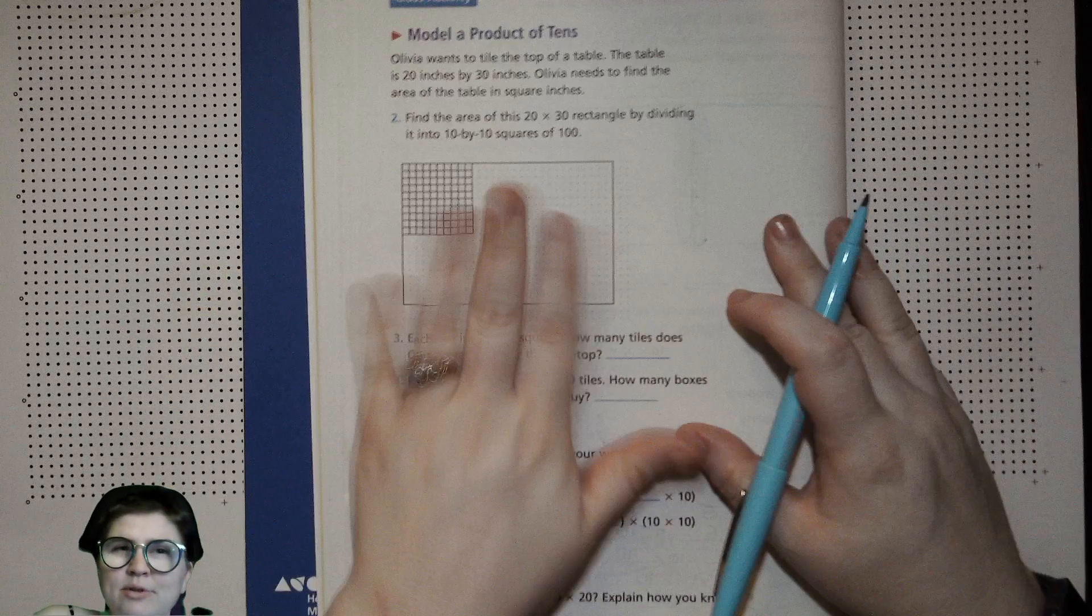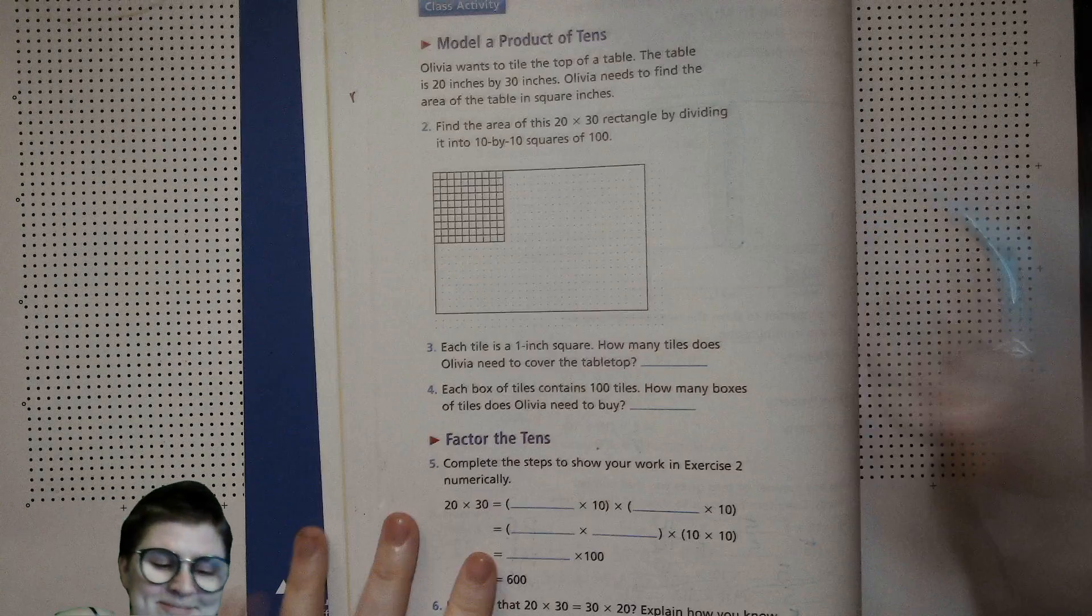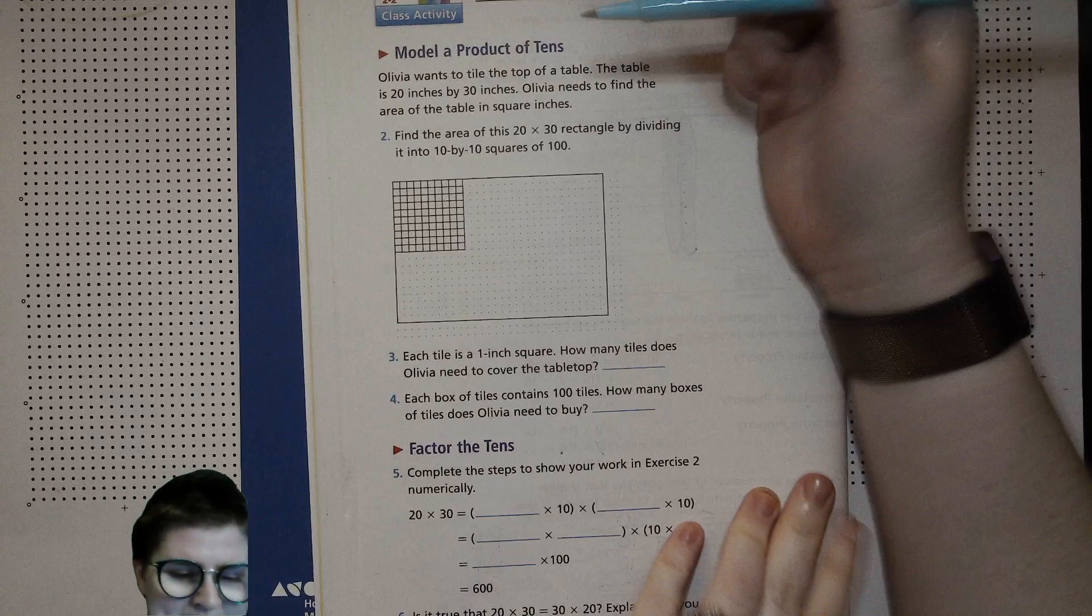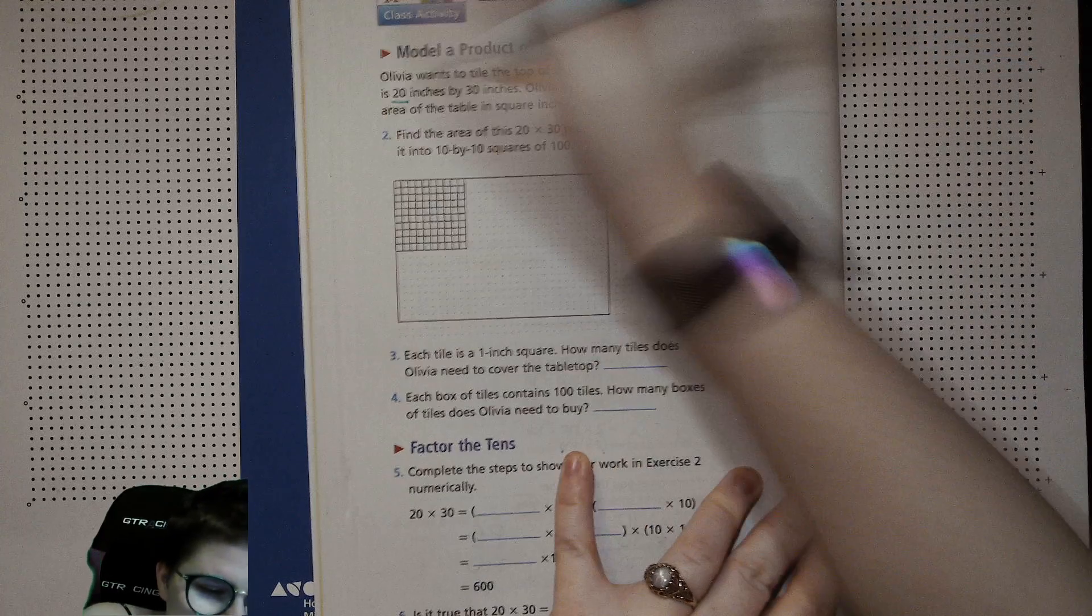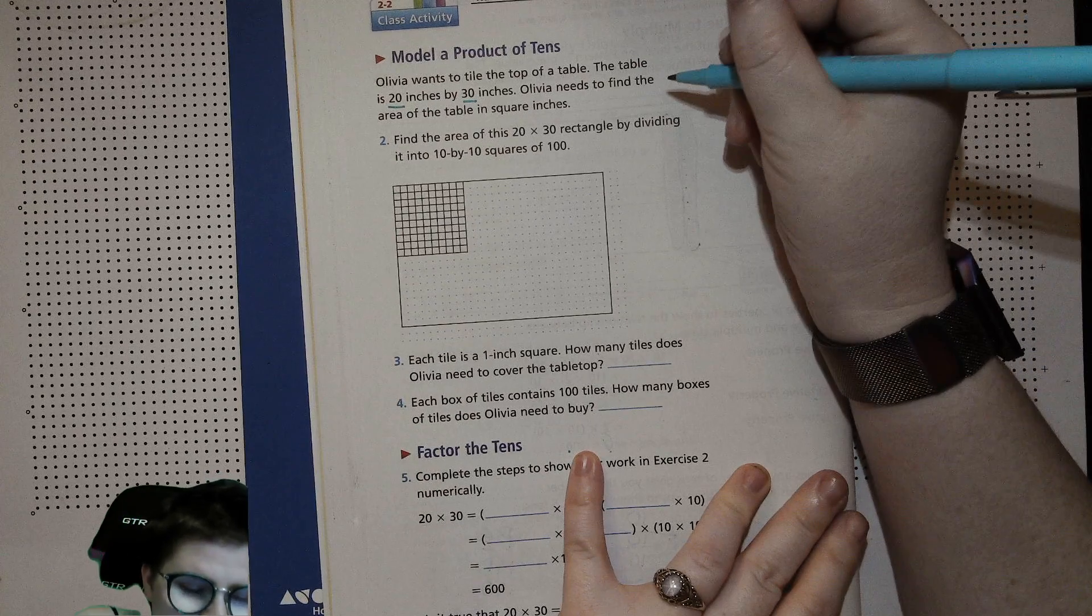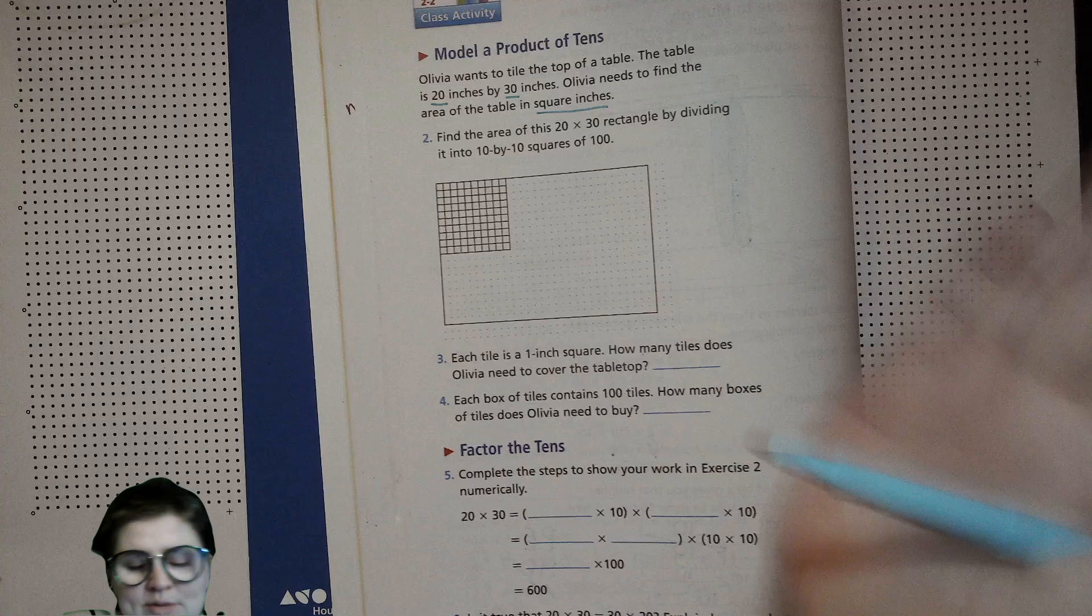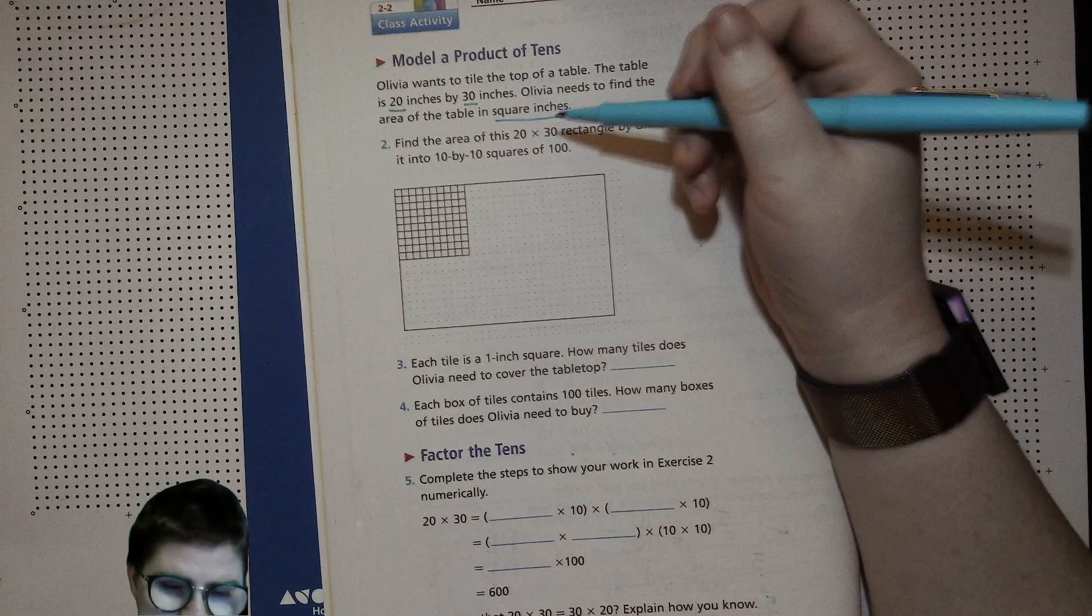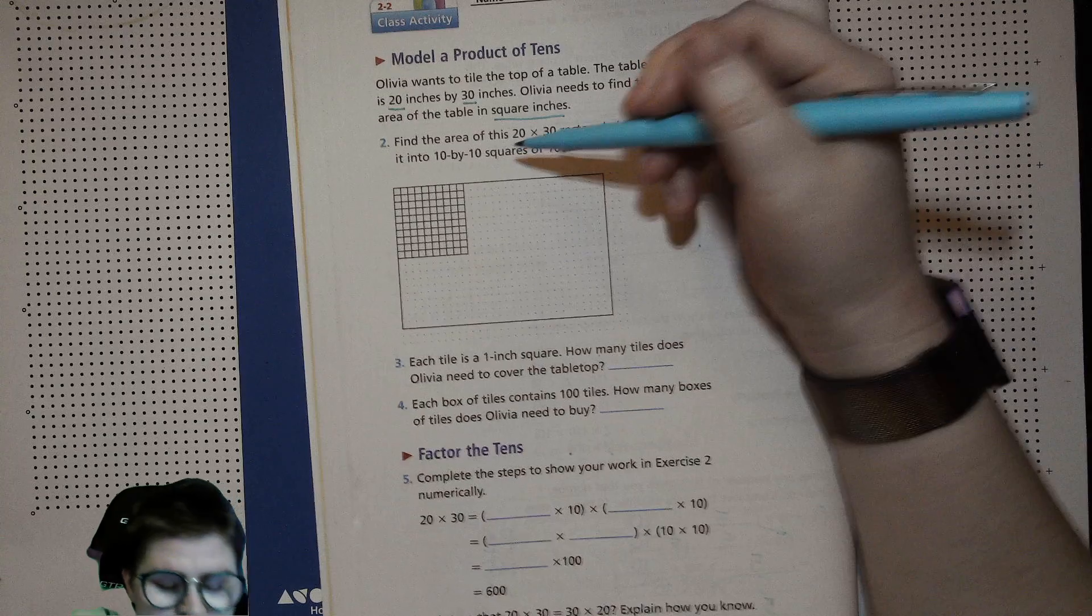Olivia wants to tile the top of a table. The table is 20 inches by 30 inches. Olivia needs to find the area of the table in square inches. Find the area of this 20 by 30 rectangle by dividing it into 10 by 10 squares of 100.